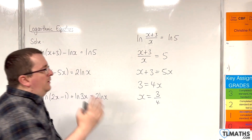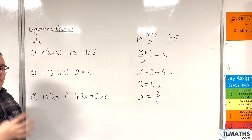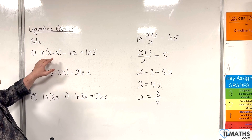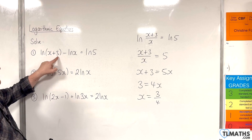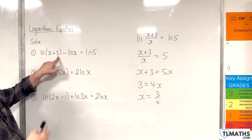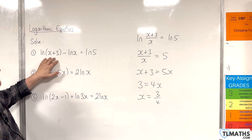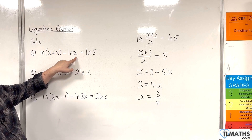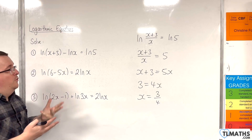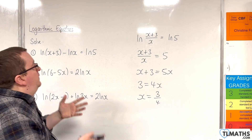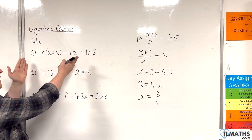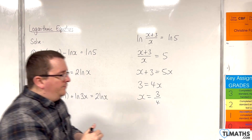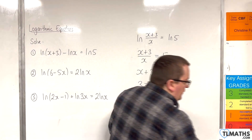Now you must double check: does that solve the original equation? We're going to have 3 quarters plus 3, which is positive, so that's fine. And the natural log of 3 quarters is fine — 3 quarters is positive — so that does solve the original equation.